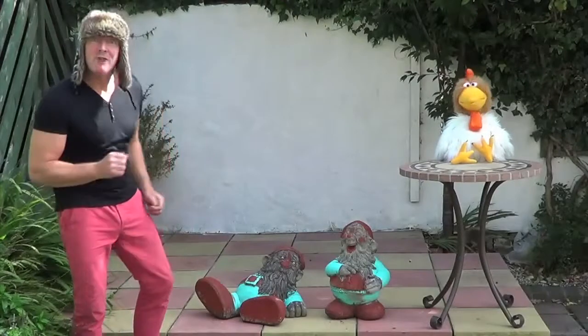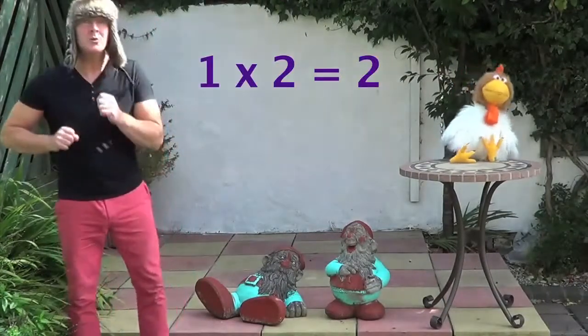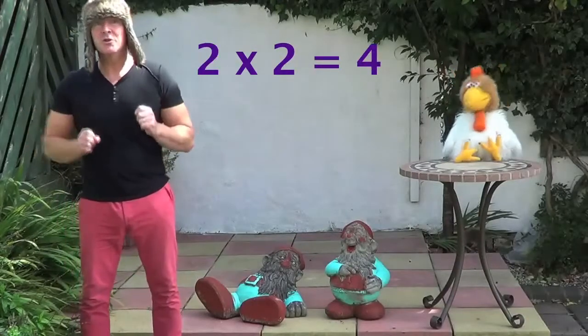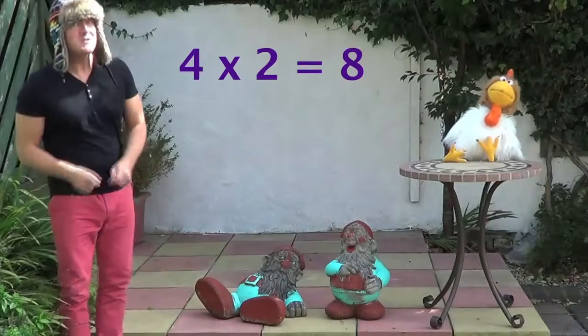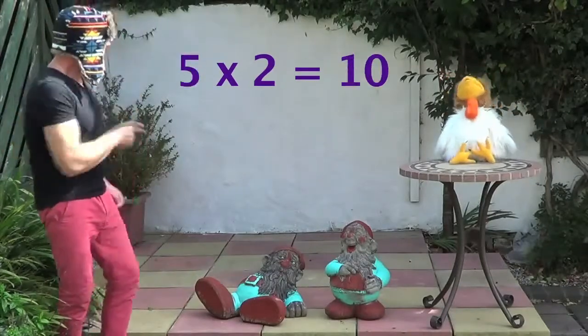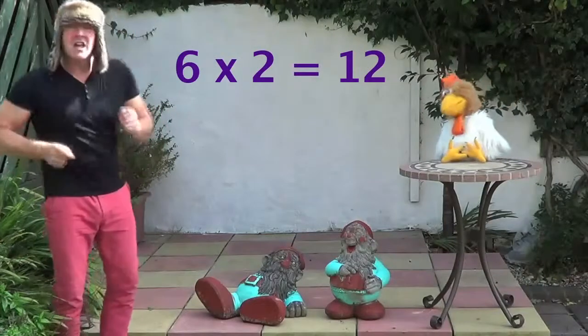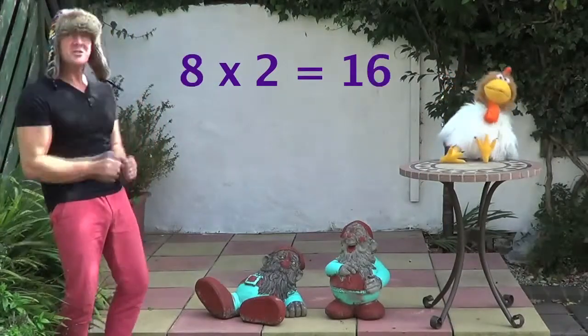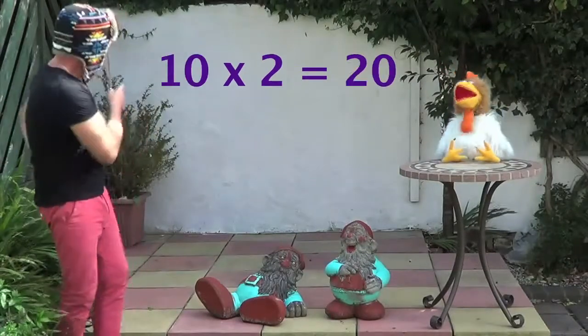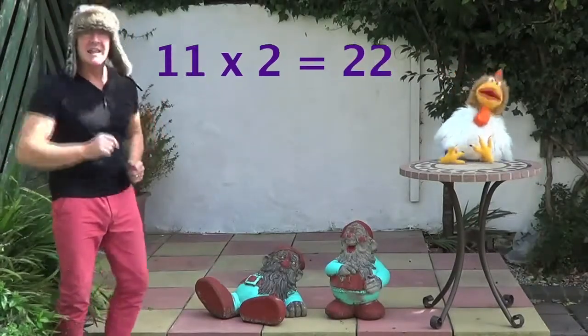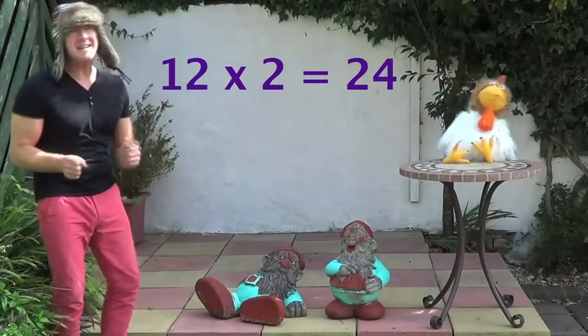Okay Professor Giggle, are you ready? Ready and waiting, Jingle Jeff! 1 x 2 is 2, 2 x 2 is 4, 3 x 2 is 6, 4 x 2 is 8, 5 x 2 is 10, 6 x 2 is 12, 7 x 2 is 40, 8 x 2 is 60, 9 x 2 is 80, 10 x 2 is 20, 11 x 2 is 22, 12 x 2 is 24!